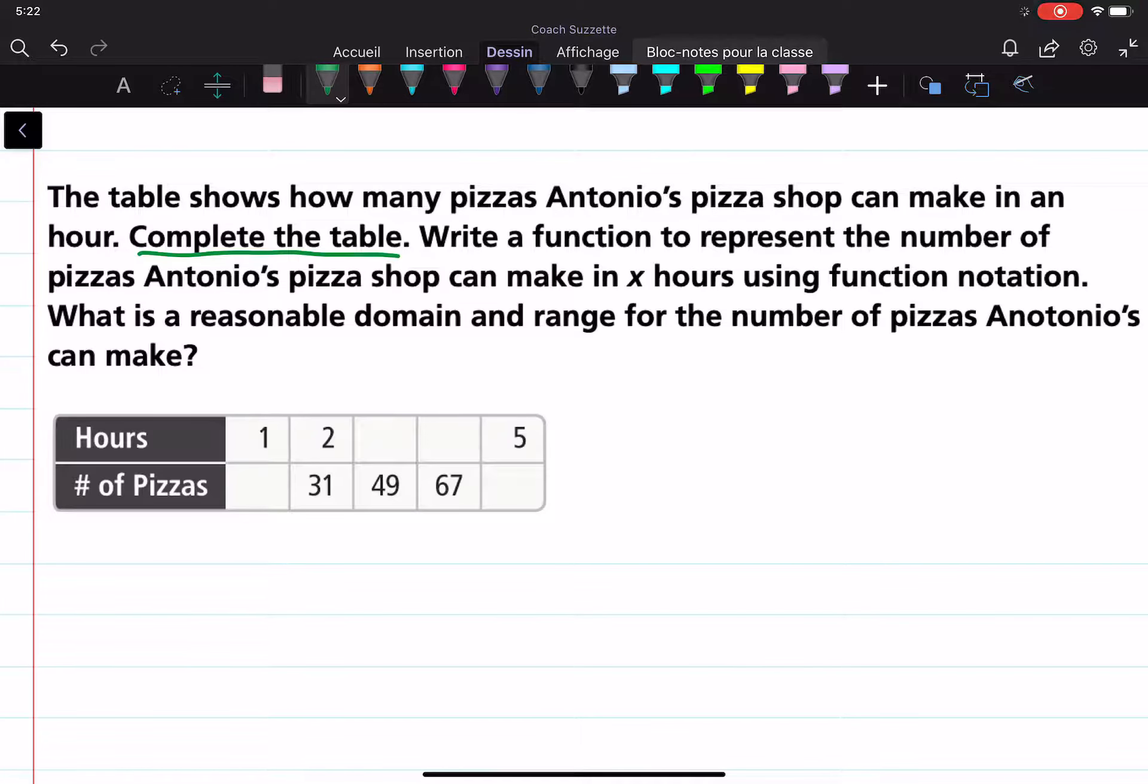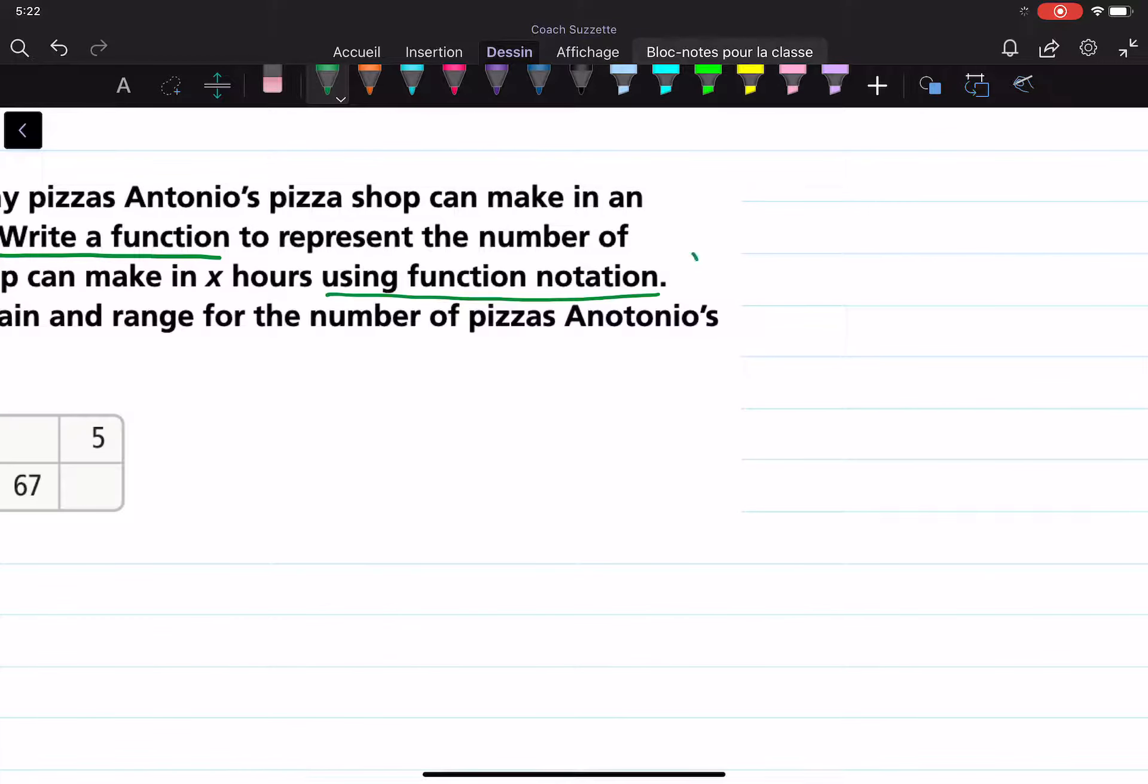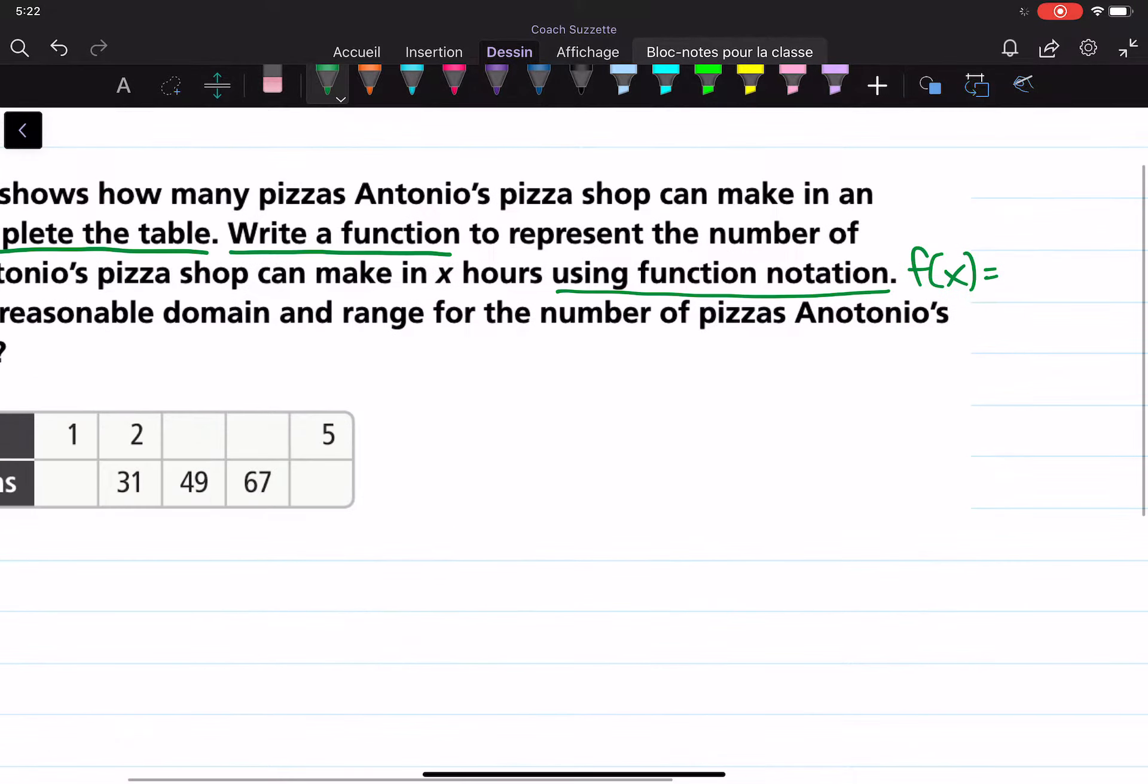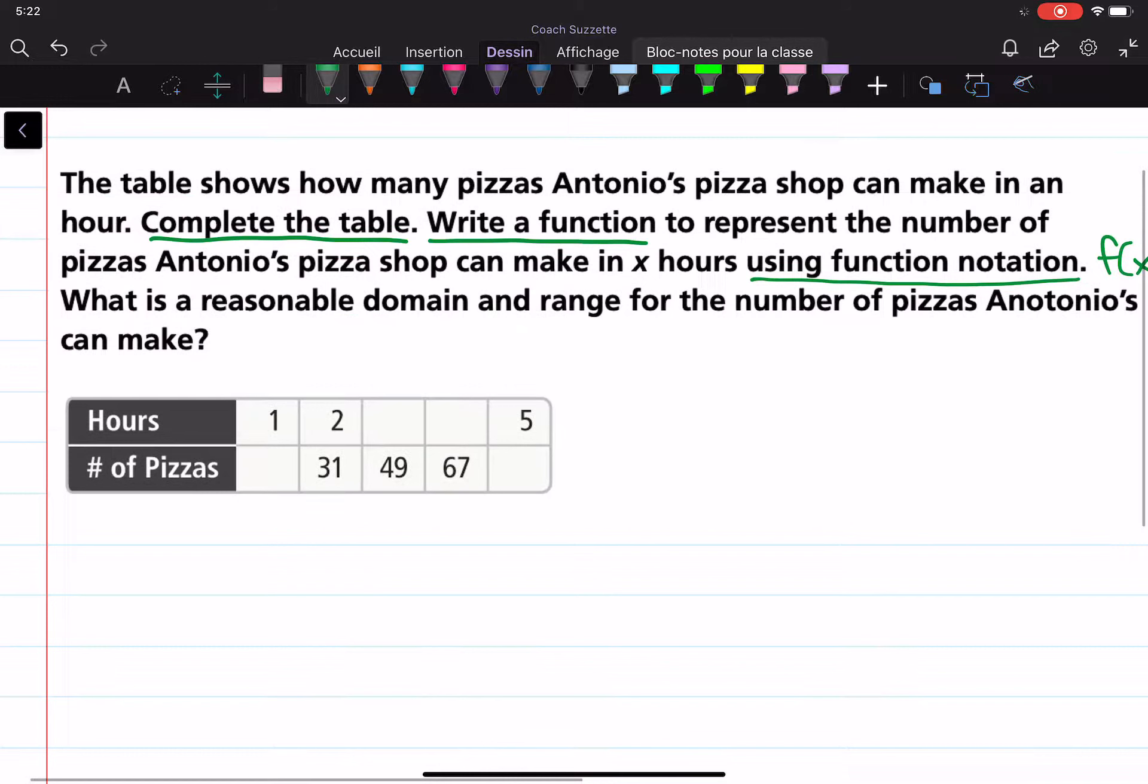Then we're told to write a function using function notation. Function notation looks something like this, for example. And then we need to determine a reasonable domain and range for this relationship here.